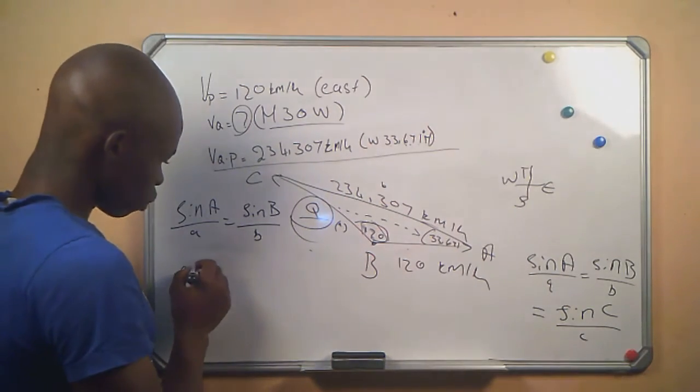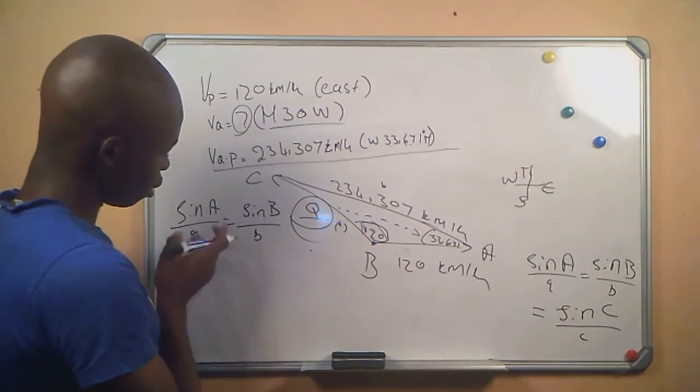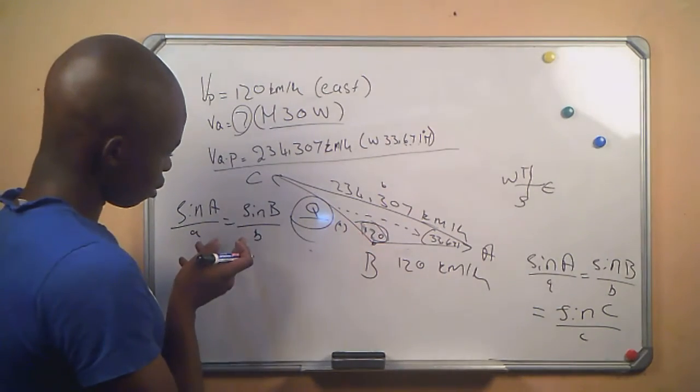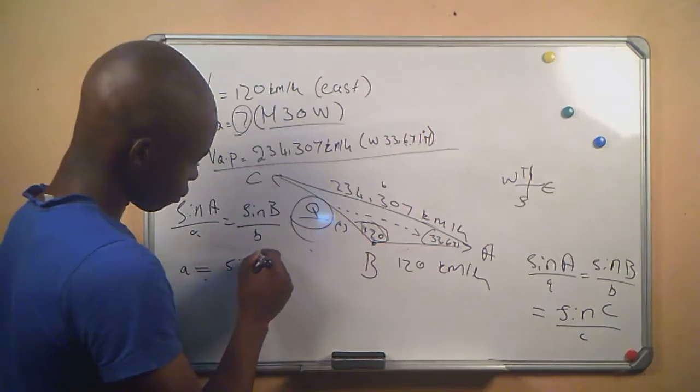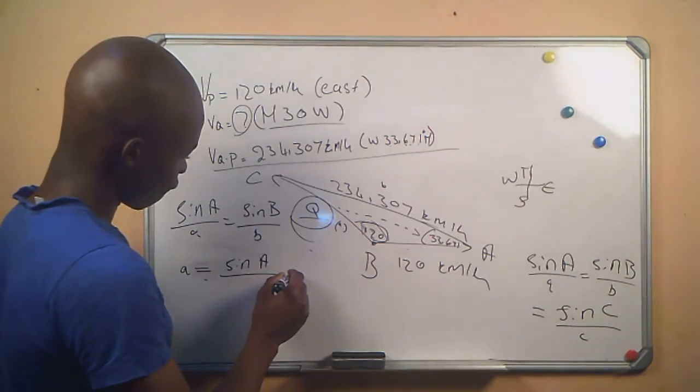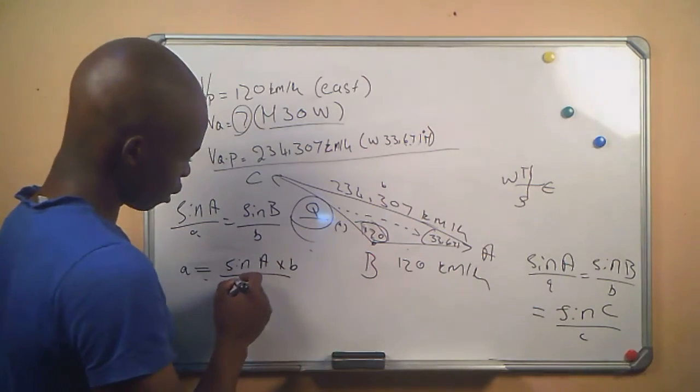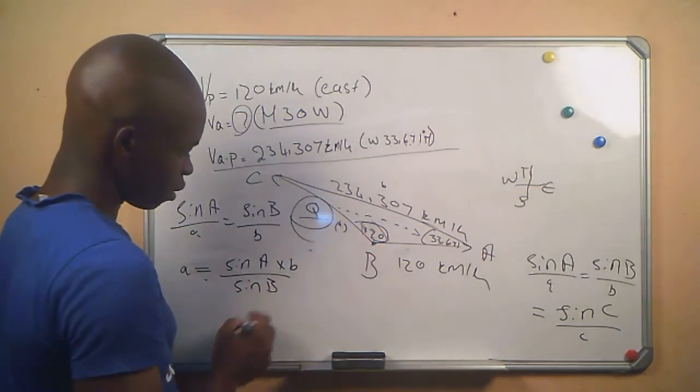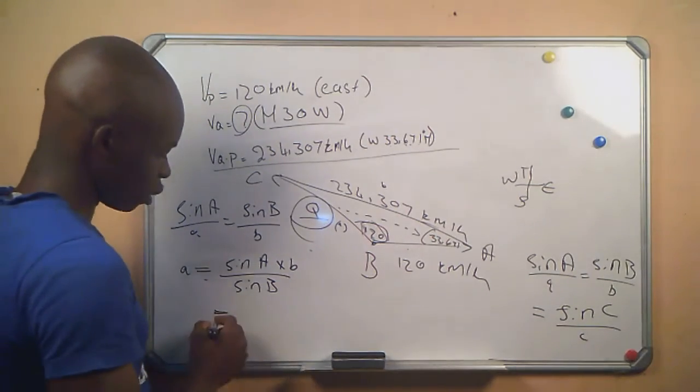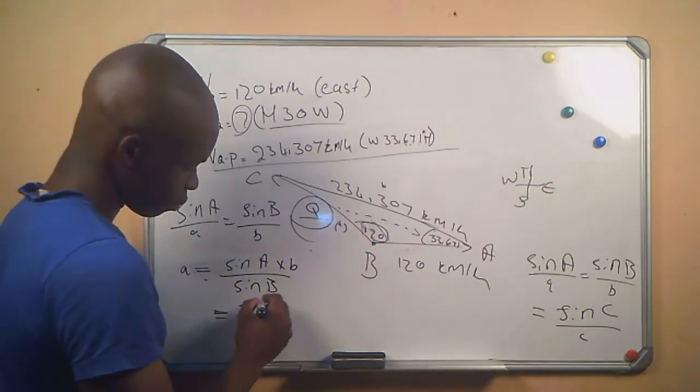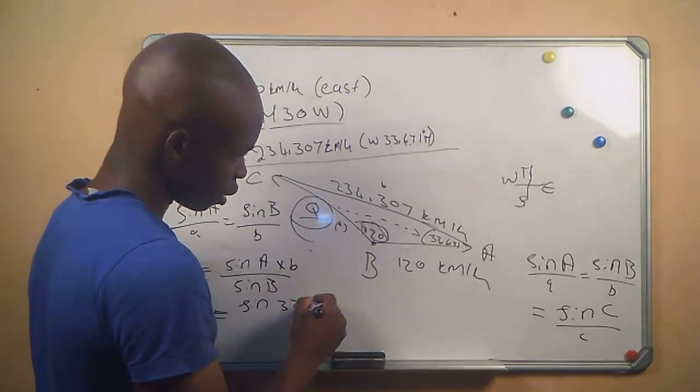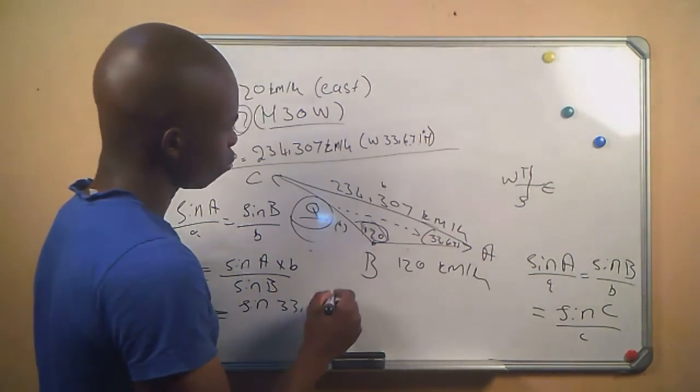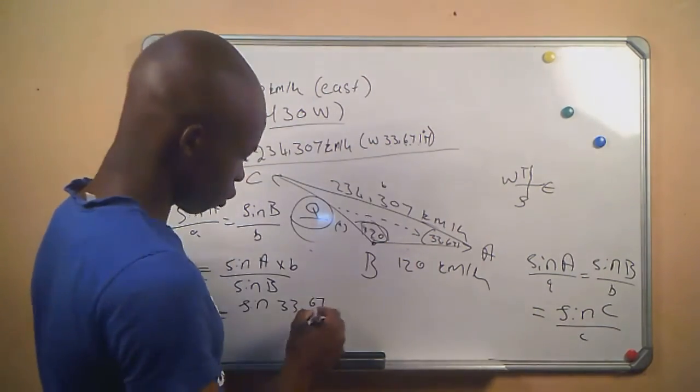We solve, we make it the subject of the formula. Small a, I will say, and then I will say sine a divided by sine b, times our small b, if I'm not mistaken.